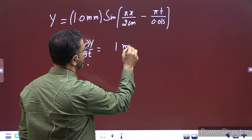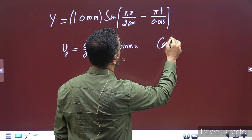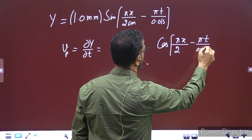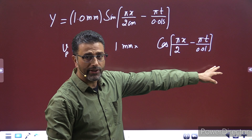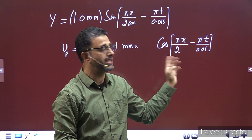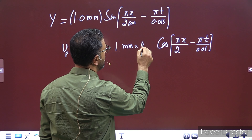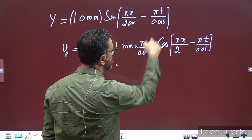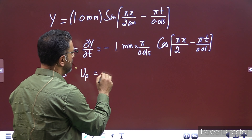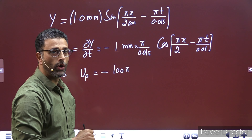Partial differentiation करना है with respect to time। यह तो बाहर ऐसे ही रहेगा: 1 mm। Sin की differentiation is cos। Cos of (πx/2 cm − πt/0.01 seconds)। हम partial differentiation करें with respect to time तो x constant माना जाएगा, उसकी internal differentiation 0 बन जाएगी। T का coefficient रहेगा: minus π divided by 0.01 seconds। So vp = 100π mm per second।